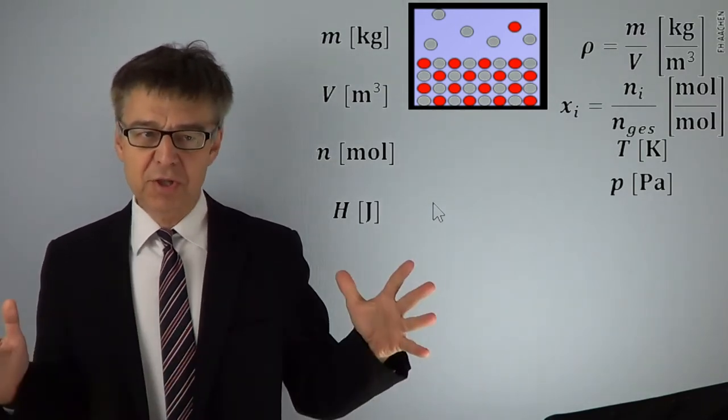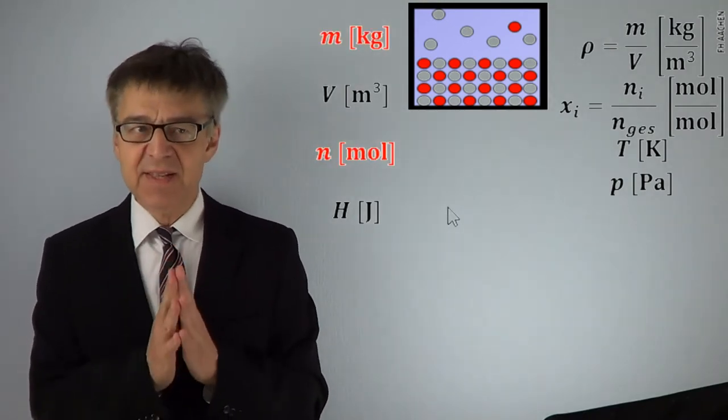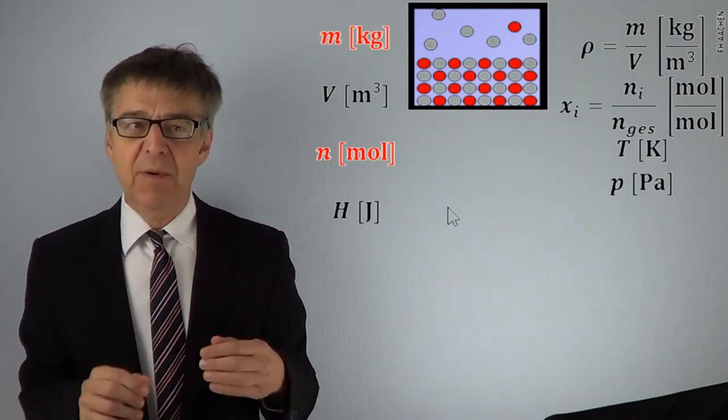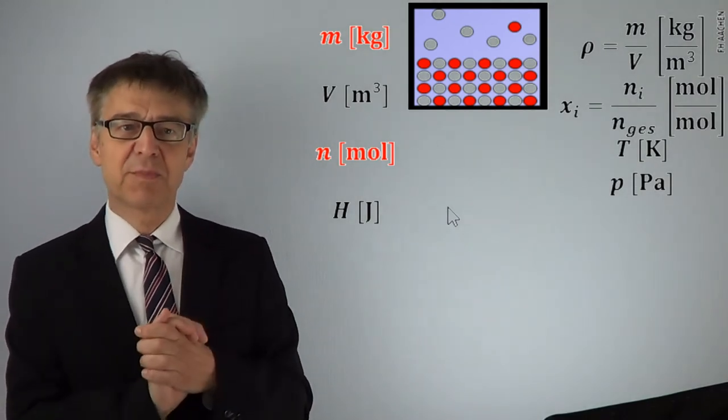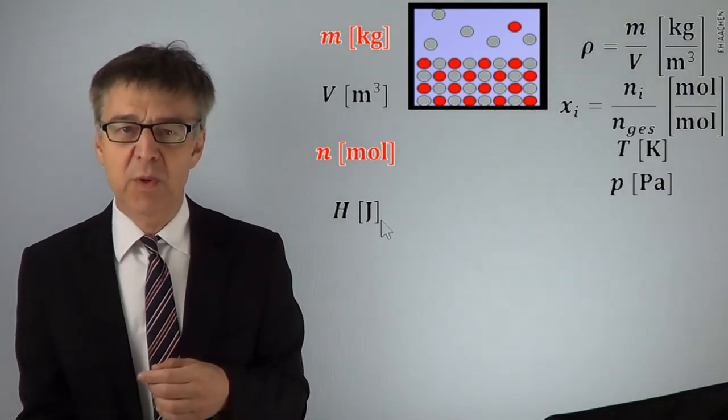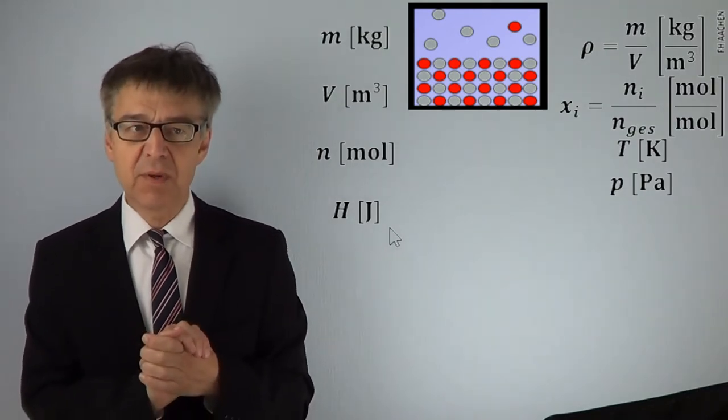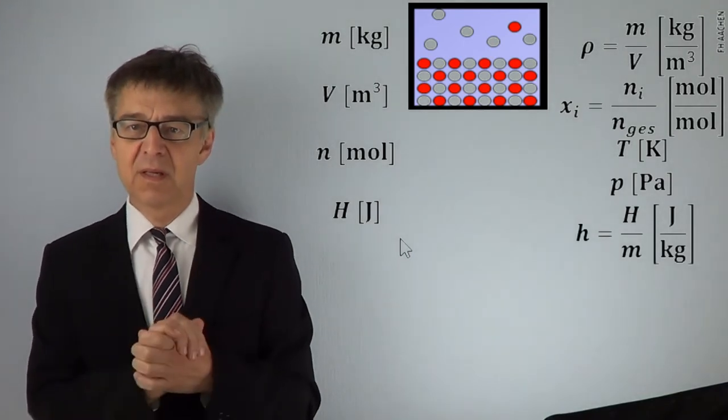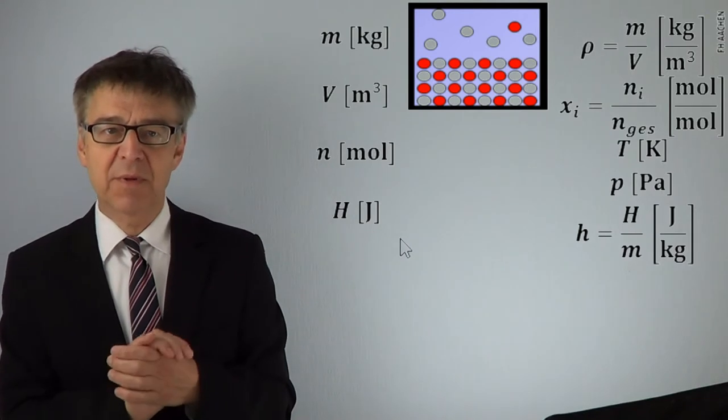I can make any extensive state variable into an intensive one, as I divide it by the mass or amount of substance. Then I get the corresponding specific or molar quantity. H divided by M, for example, is the specific enthalpy. Joules per kilogram is a unit.